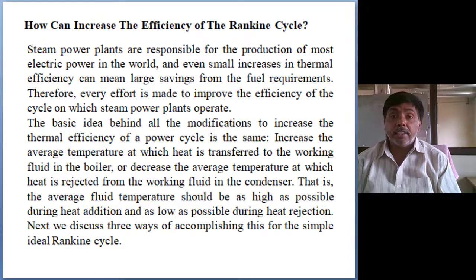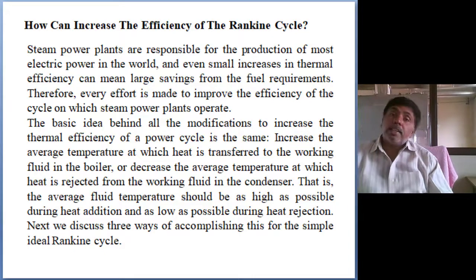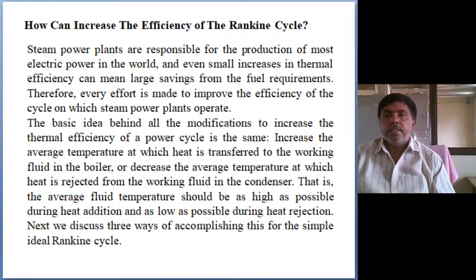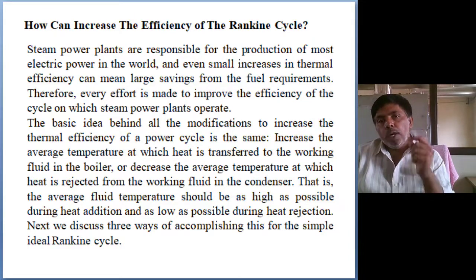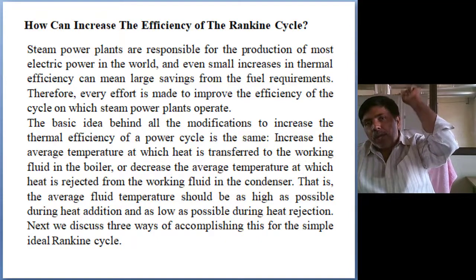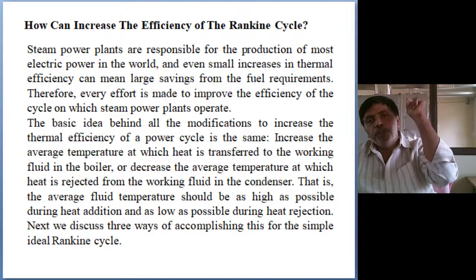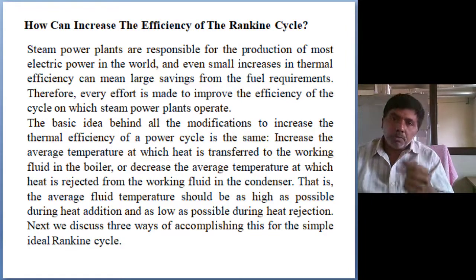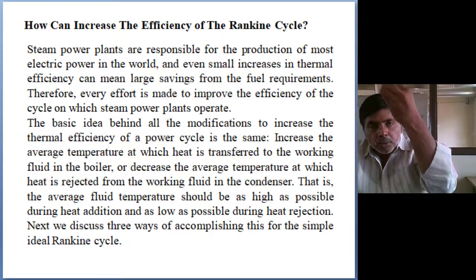This Rankine cycle is used for all our electrical generation needs. In 2020, 65 percent of the electrical energy generation is based on the Rankine cycle — based on power plants only. So if you enhance the efficiency by even one percent, and we are producing five lakh megawatt per hour, a huge enhancement in energy output will come from just a small 0.1 percent improvement in efficiency.